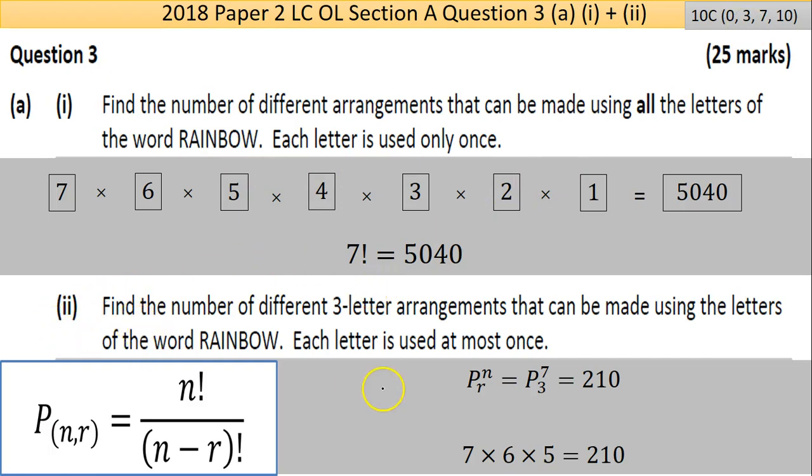Now part 2. This is very tricky, this one. Find the number of different 3-letter arrangements that can be made using the letters of the word RAINBOW. Each letter is used at most once. Now this is a classic permutation using the nPr scenario. I've written it differently here just for the way I can type it. This is one way of expressing the formula. Basically, the way you're looking at it is there's 7 letters, you have to pick 3. Put it through the calculator, you get 210.